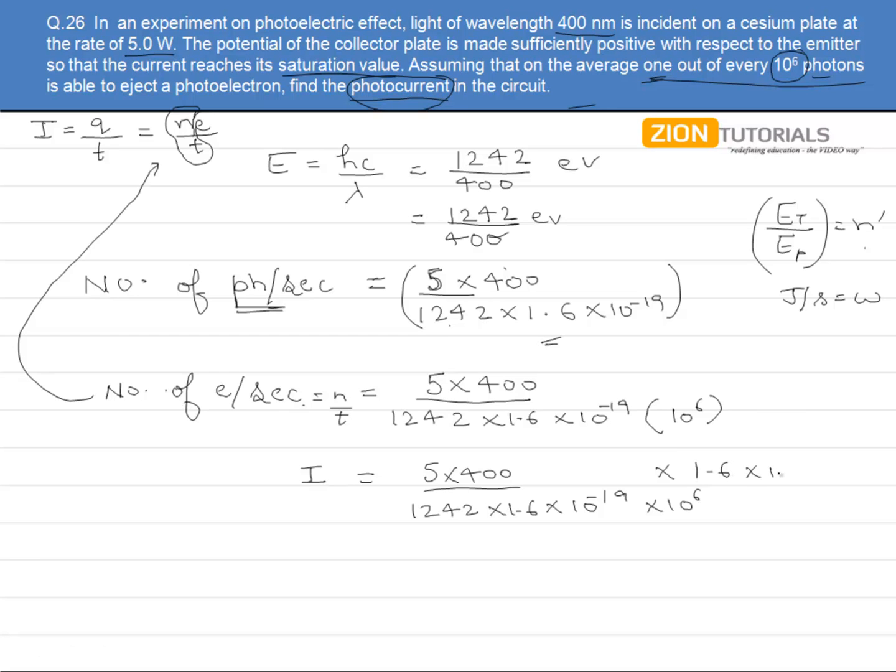That is 1.6 × 10^-19. This gives us the current, which is 1.6 × 10^-6 ampere or simply 1.6 micro ampere.